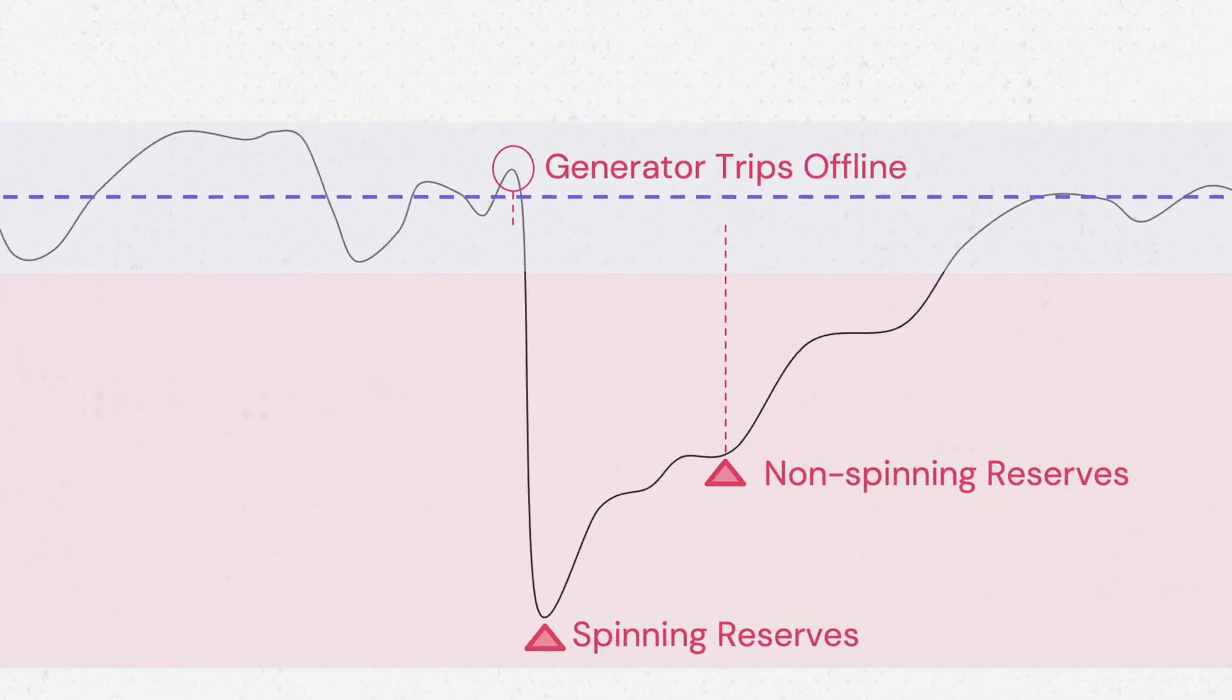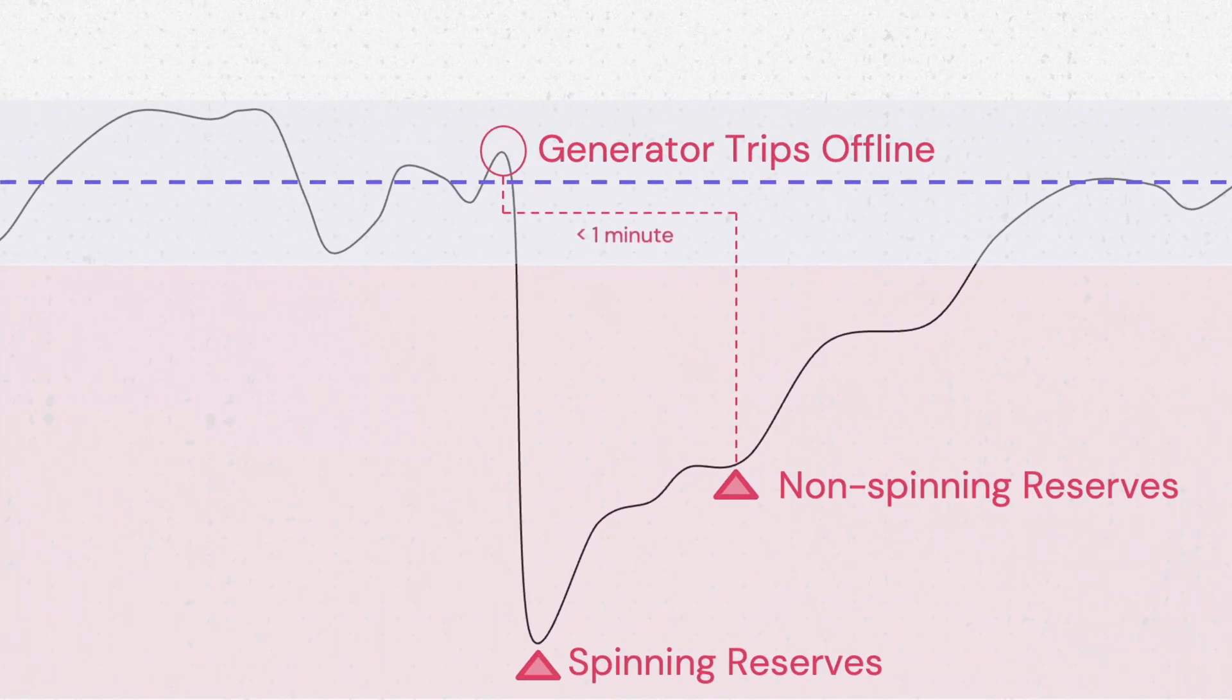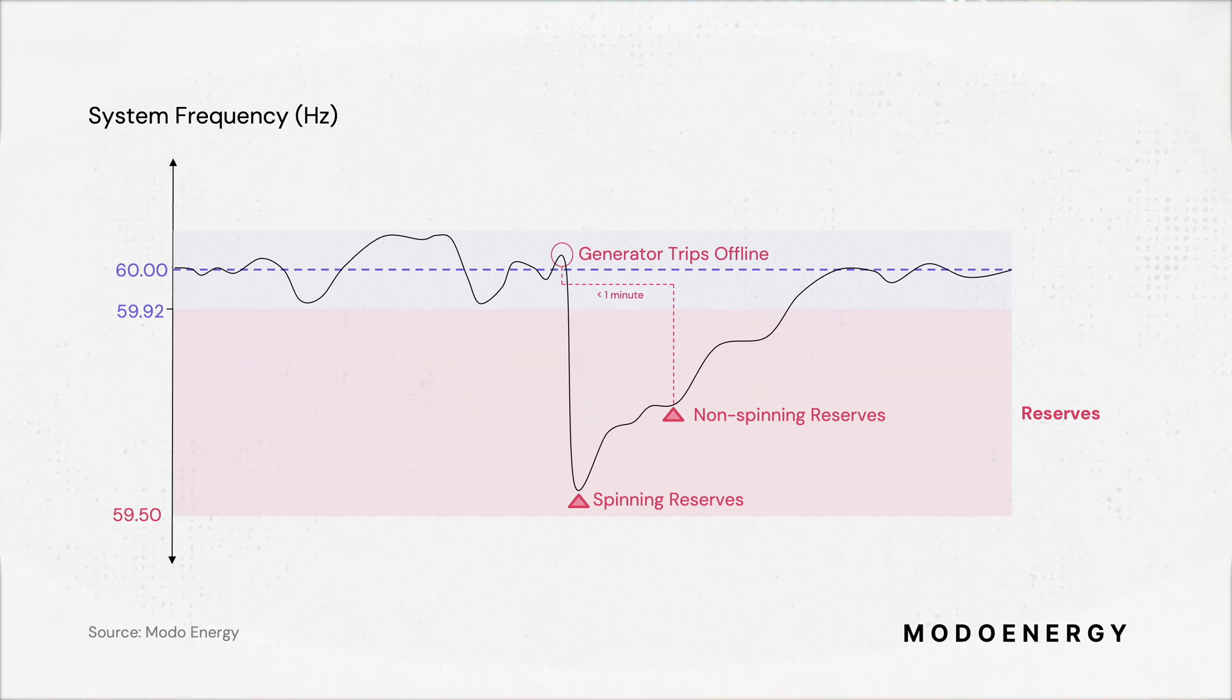These are then supplemented by non-spinning reserves, offline resources that can take up to a minute to ramp up and help frequency come back to normal operating conditions.